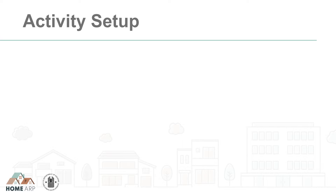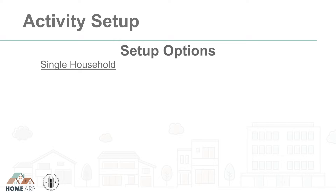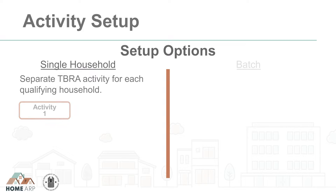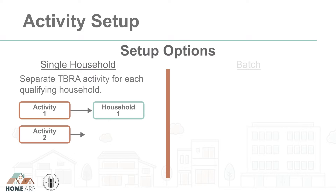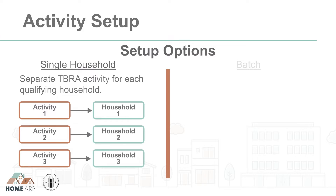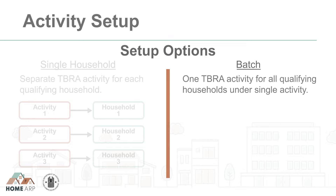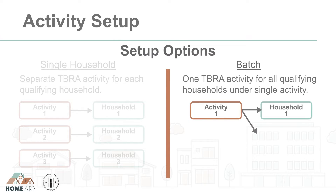When it comes to HomeARP TBRA activity setup, the PJ has two options: Single Household Setup or Batch Setup. Single Household Setup allows a PJ to set up its TBRA activities so that each qualifying household has its own separate IDIS activity. With the Batch Setup option, the PJ would set up one TBRA activity and include all qualifying households under that single activity.